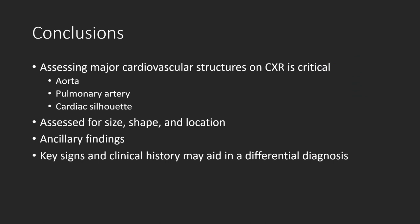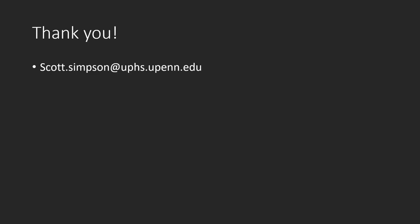In conclusion, assessing the major cardiovascular structures on chest x-rays is critical. In this lecture, we focused specifically on abnormalities of the aorta, pulmonary arteries, and cardiac silhouette, demonstrating that it is not only important to assess size, but also shape and location. We also highlighted some ancillary findings, clinical clues, and signs that may lead to a specific diagnosis. Thank you for your time — if there are any questions, please feel free to email me.